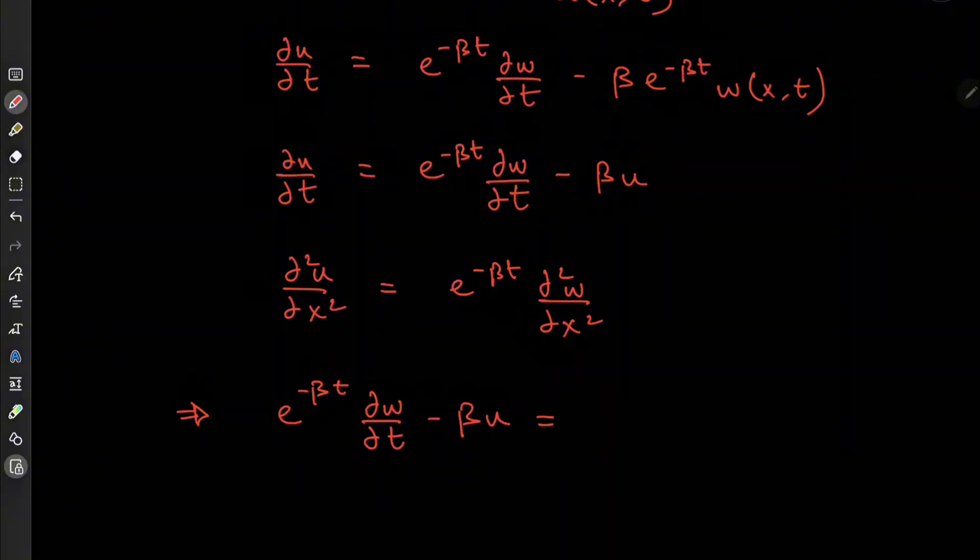And recall on the right hand side, we had this diffusion term, partial squared w over partial x squared minus the beta times u term again. So there's cancellation.